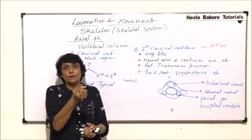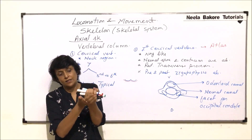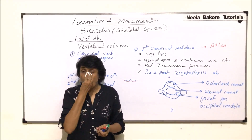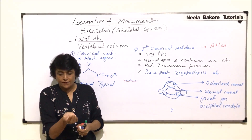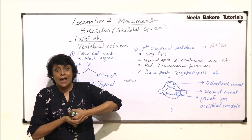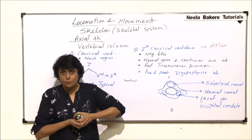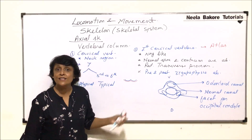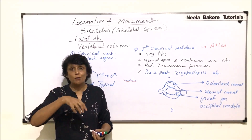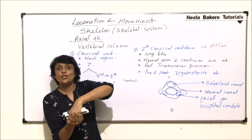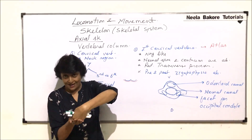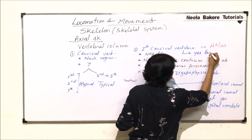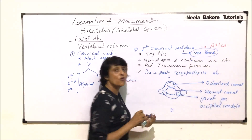Imagine the occipital condyle fitting into the curved depression on the atlas. When the skull fits onto atlas, a specific movement takes place. The occipital condyle sitting in the depression allows a nodding motion — moving the head up and down. This is why atlas is also known as the 'yes bone,' because it is responsible for the yes or nodding movement of our head.